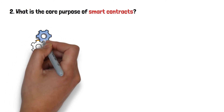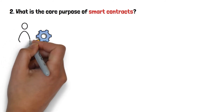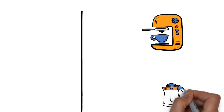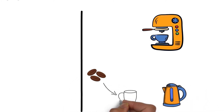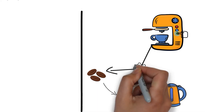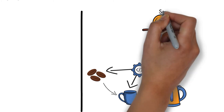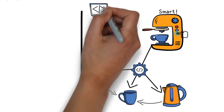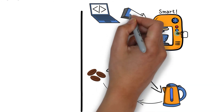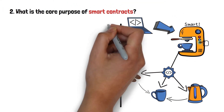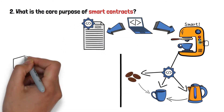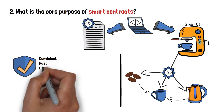This is one of the core purposes that smart contracts serve. They allow for certain processes to happen automatically, without the need for a human being to intervene. Think of a coffee machine. Instead of boiling the water in a kettle, adding coffee to a mug, and then filling the mug with hot water, all that you need to do is push a button on the coffee machine and wait! The process happens automatically. Now you can call your coffee machine a smart one — smart, because it works based on some initially programmed logic, with no need for third parties to be involved.